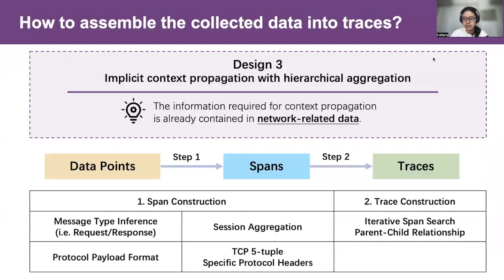Finally, how do we assemble the collected data into traces? Traditional tracing tools often generate per-request unique identifiers and propagate them along the message with specific headers, known as explicit context propagation. DeepFlow, on the contrary, changes nothing in the message. Instead, we claim that the network-related data collected by eBPF are sufficient for trace assembly. We call this implicit context propagation. For the detailed algorithm from data points to spans to traces, please refer to the paper.